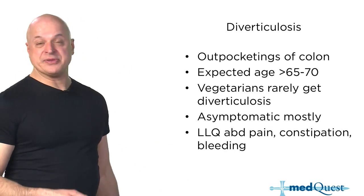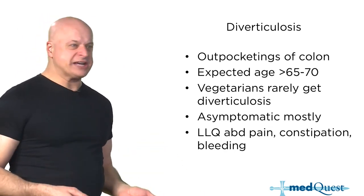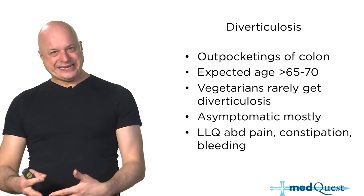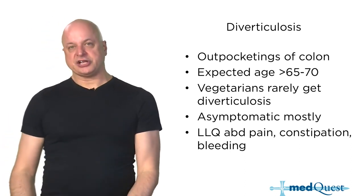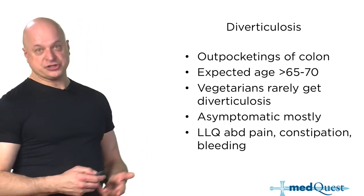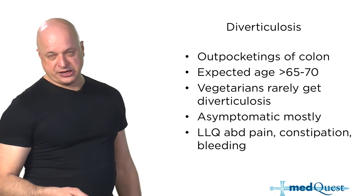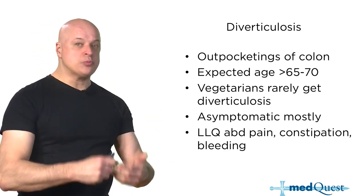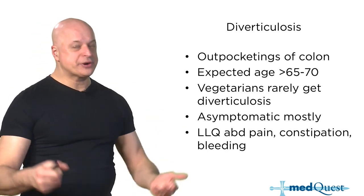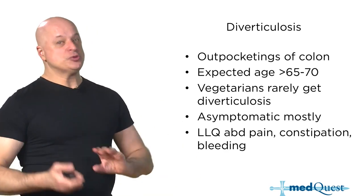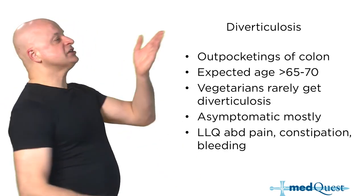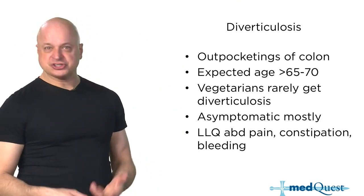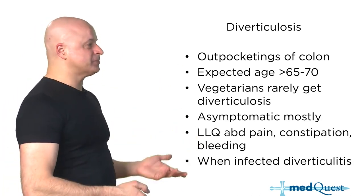Diverticulosis and angiodysplasia (AVM) are the two most common causes of lower GI bleeding. When you have diverticulosis, however, only a small number ever bleed. When you bleed from the lower GI tract, it's often diverticulosis — but when you have diverticulosis, only a small percentage bleed.